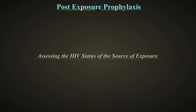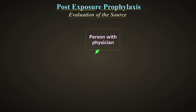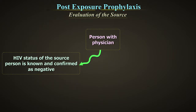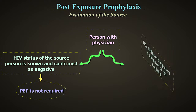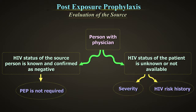Assessing the HIV status of the source of exposure: if the HIV status of the source person is known and confirmed negative, PEP is not required. If the status is unknown and neither the patient nor their blood is available for testing, the choice of whether to use PEP and what regimen will depend on the severity of the wound and the individual's HIV risk history.